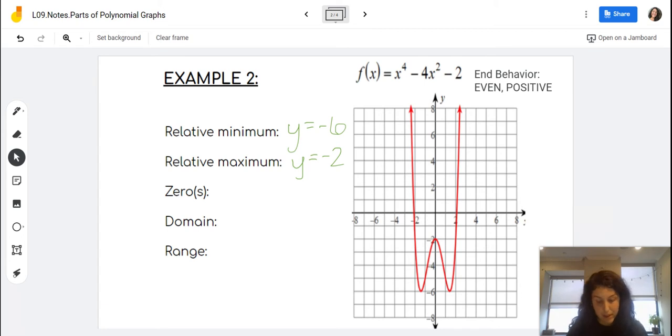My zeros here are at negative 2 and positive 2. So I'm going to write those in right now. And I might be thinking to myself that if I'm looking at this, I should have four solutions, but I only wrote two down.